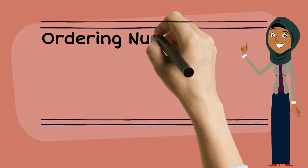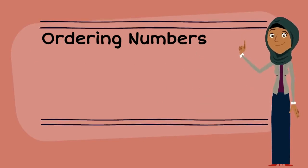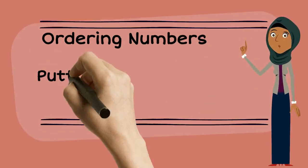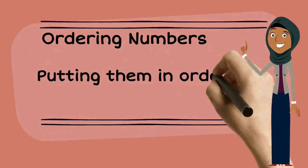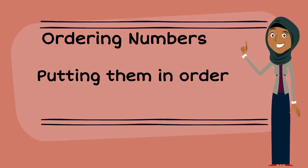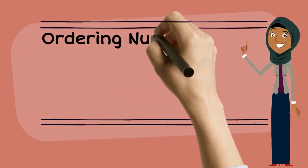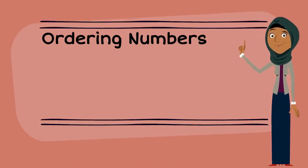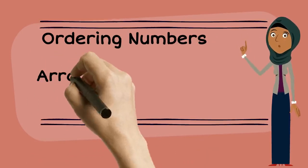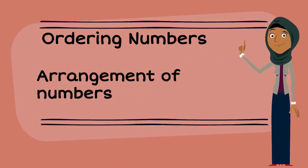Now let's talk about ordering numbers. When we order numbers, we put them in the order of counting, either counting on or counting back. In other words, ordering numbers means arrangement of numbers, either from small to big or from big to small.